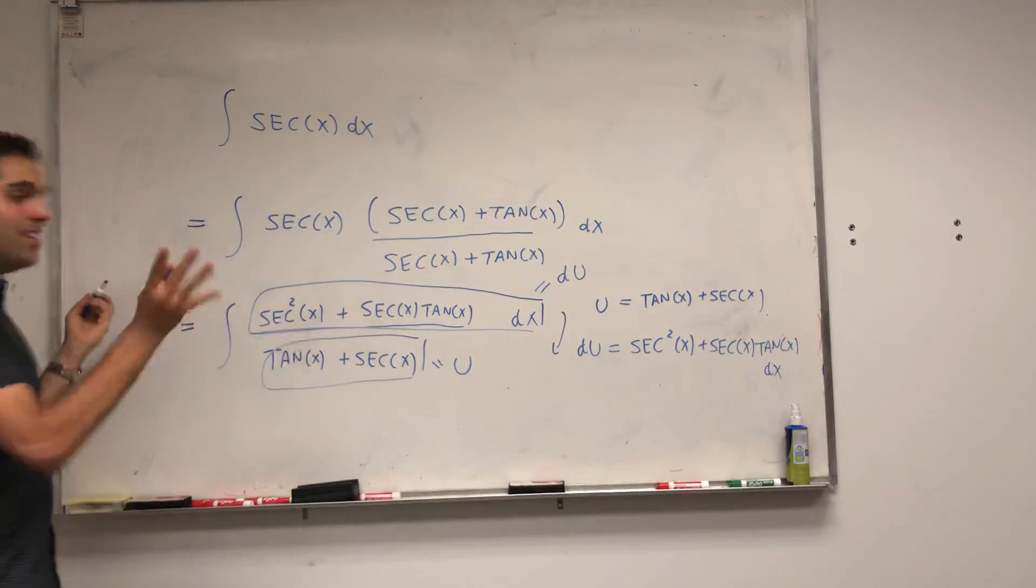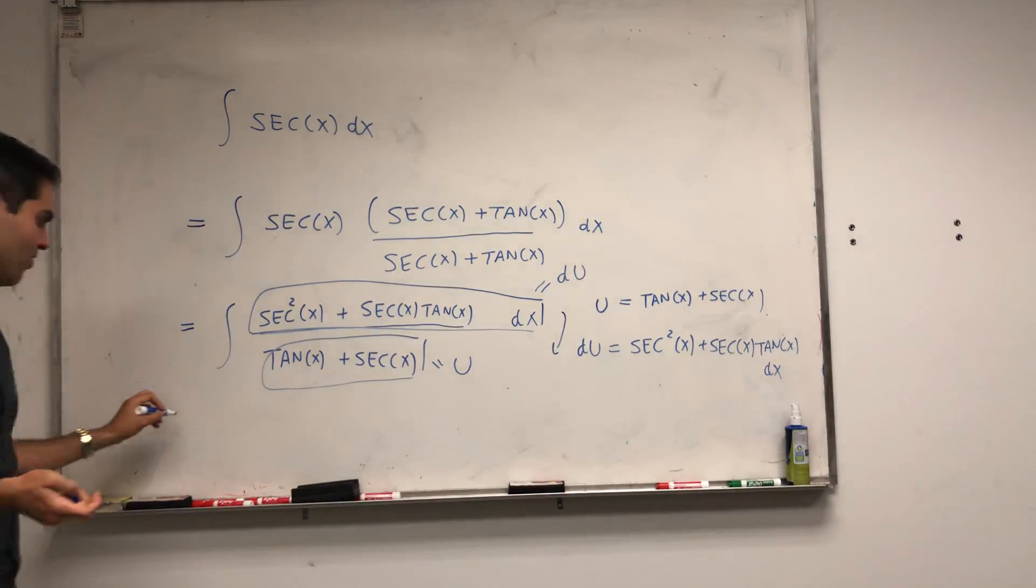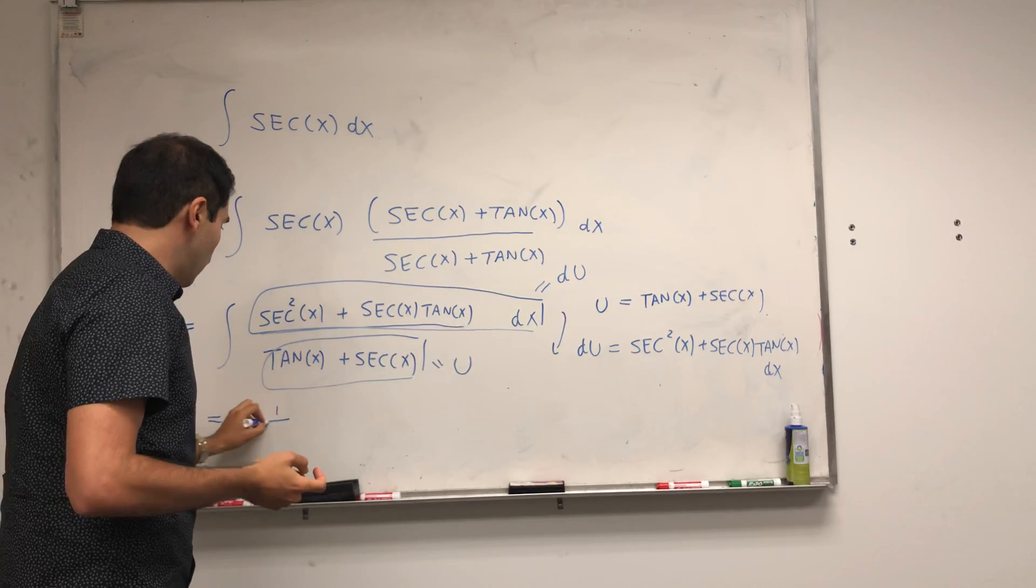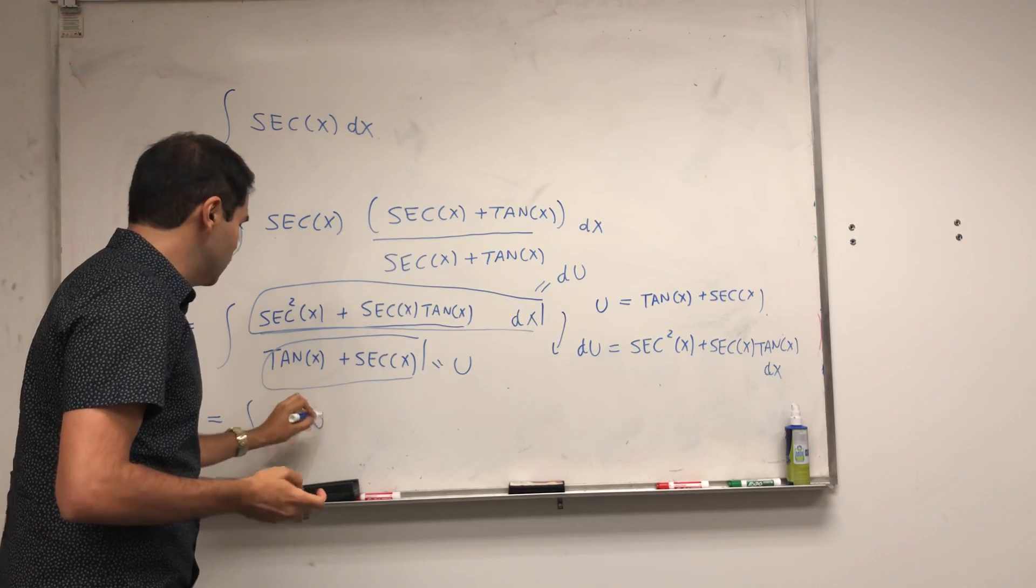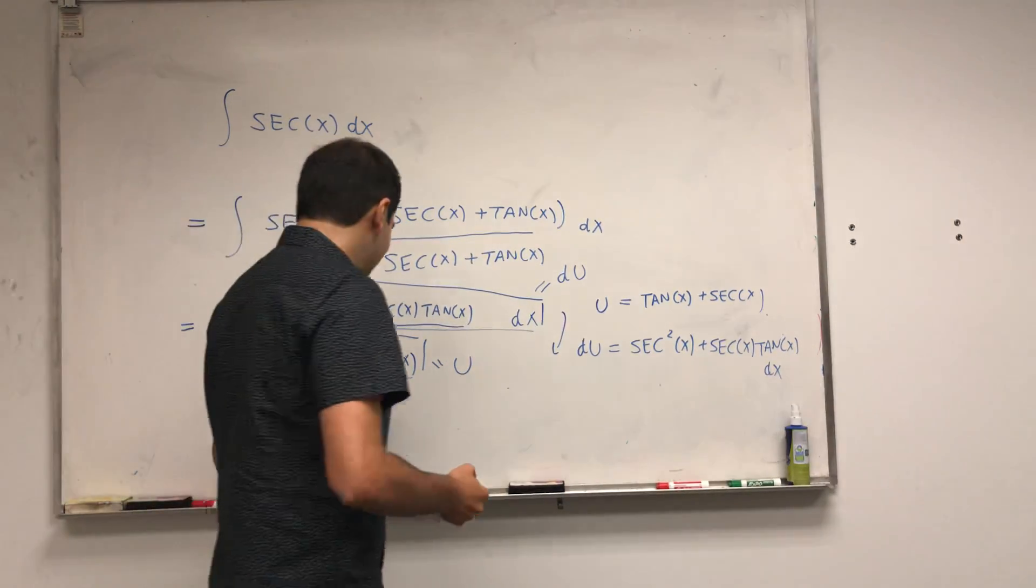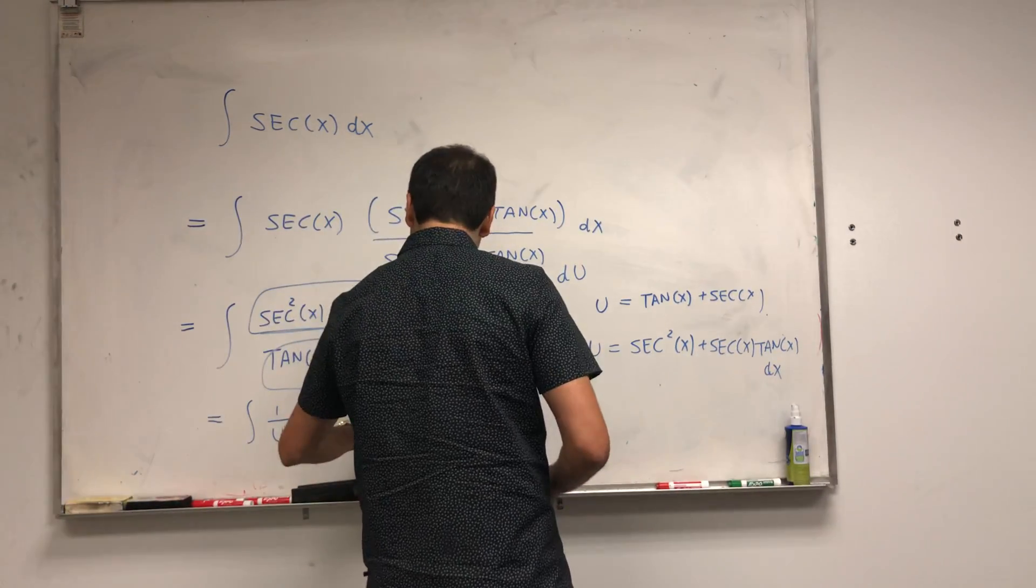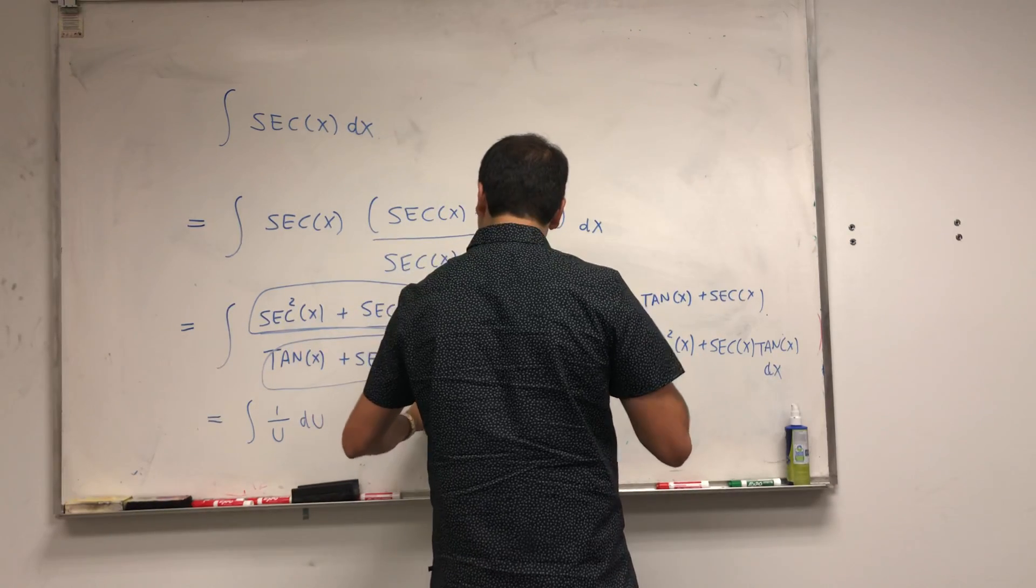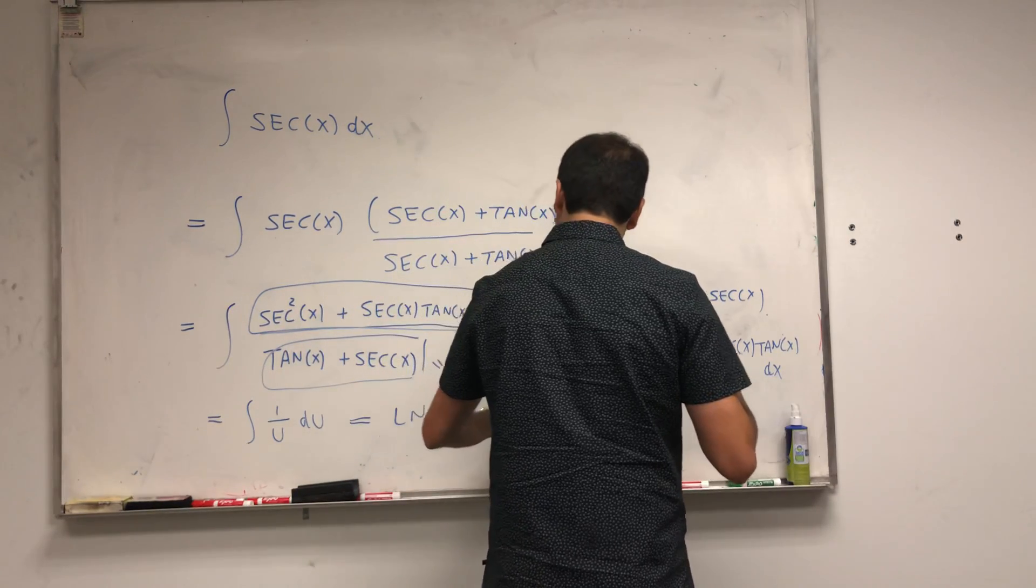So, this super complicated integral just becomes the integral of 1 over u du, which is much easier to evaluate, because this becomes ln of absolute value of u plus c.